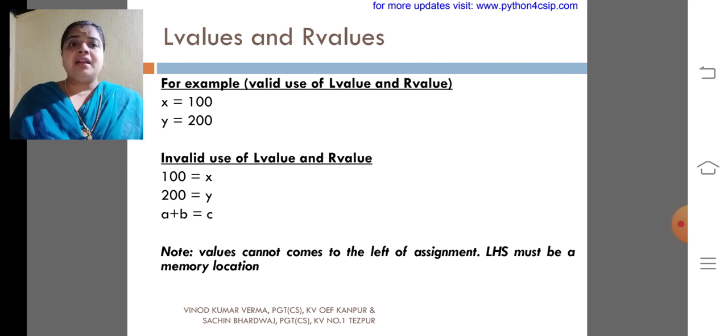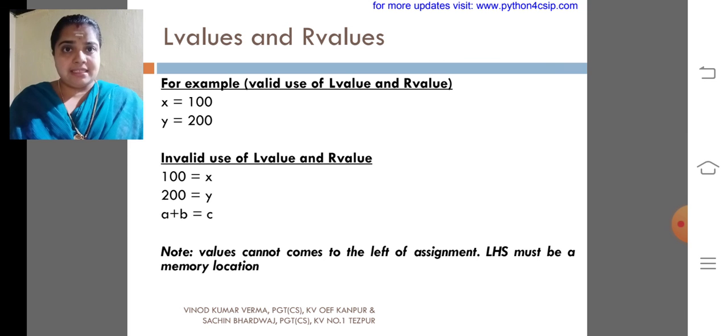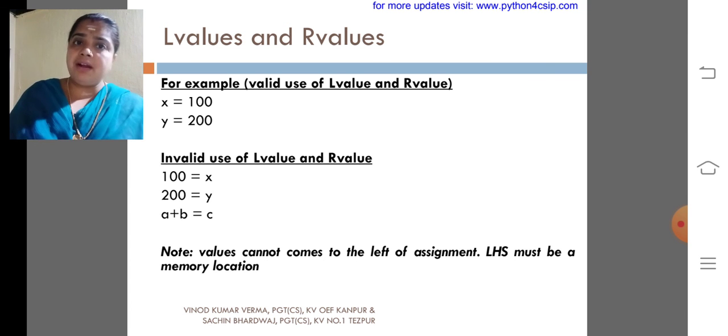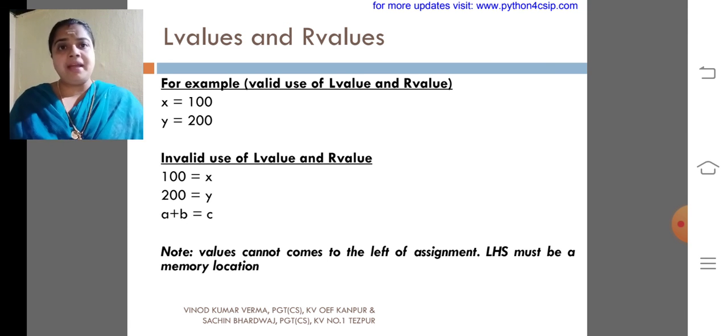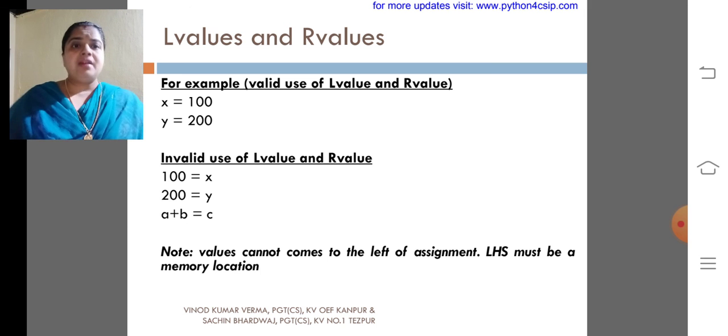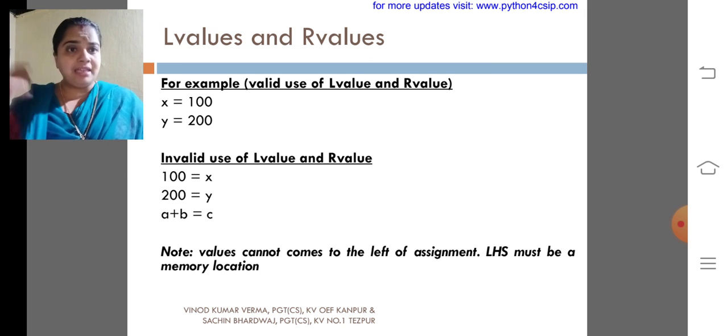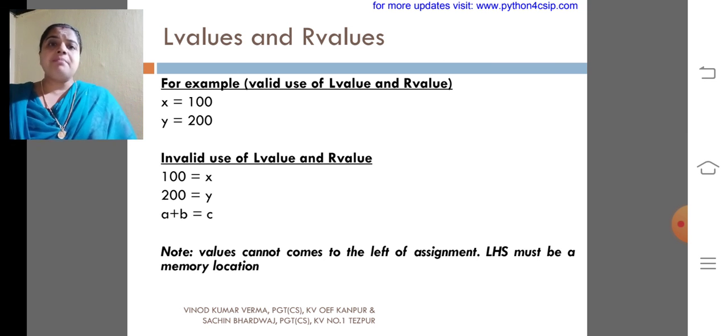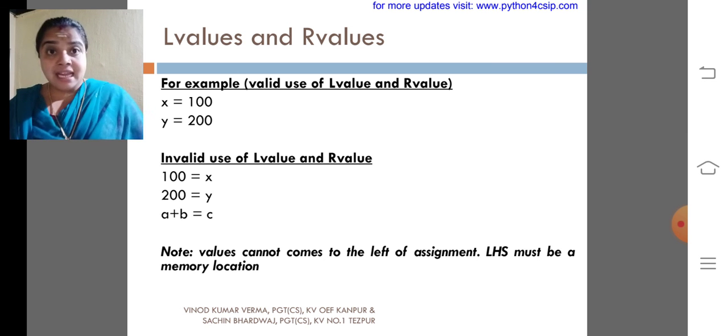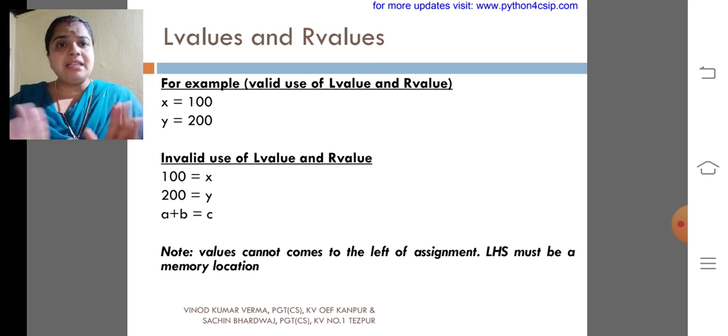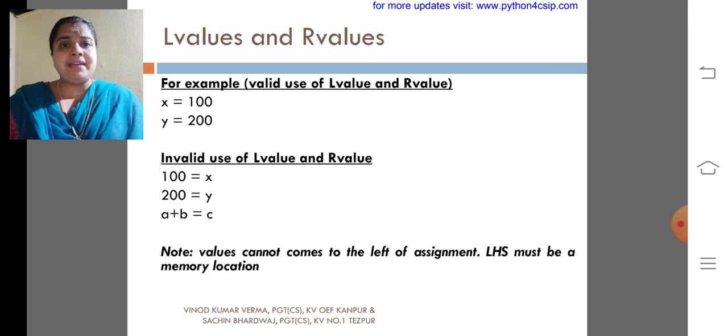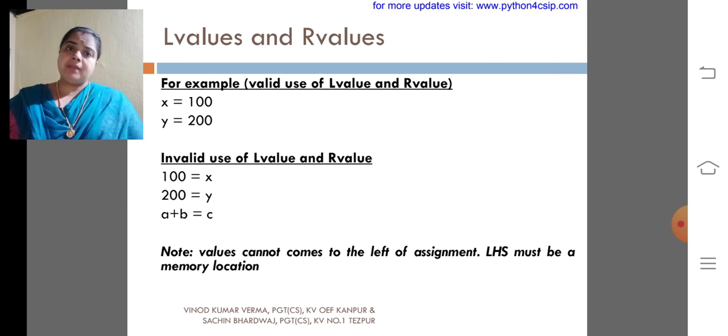Look at the next example. 100 equal to X, that is not used in Python. Similarly, 200 equal to Y, that is also an invalid expression. The values cannot come to the left-hand side of the assignment. LHS must be memory location. Memory location, that is nothing but a variable. LHS always we have to use a variable. That's all.